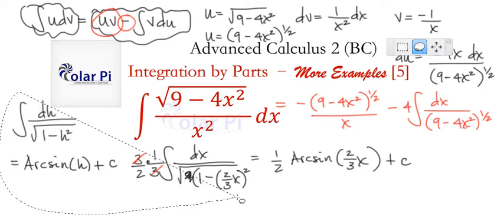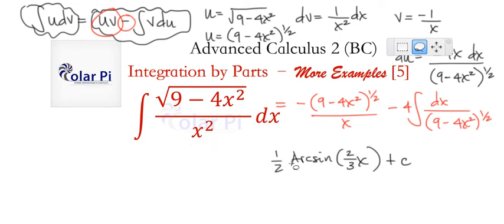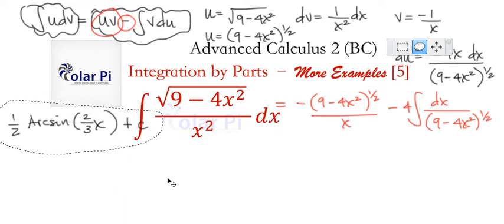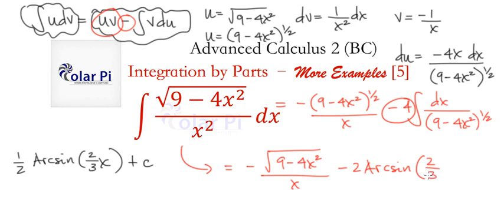So here's our final answer, that this integral equals negative root 9 minus 4x squared divided by x, and then it's minus 4 times this. The minus 4 times the 1/2 is just going to say minus 2, and then it's arcsin of 2/3 x plus c. I hope you enjoyed this. Take care.